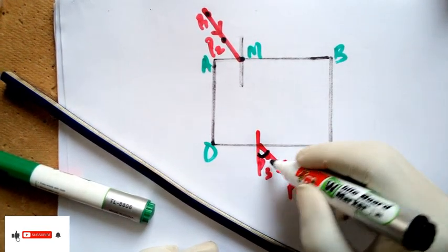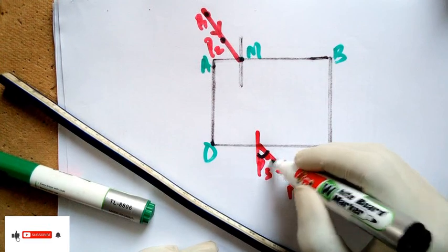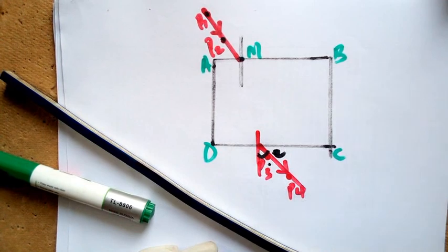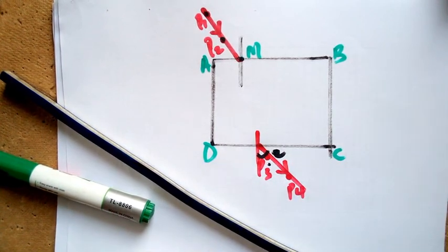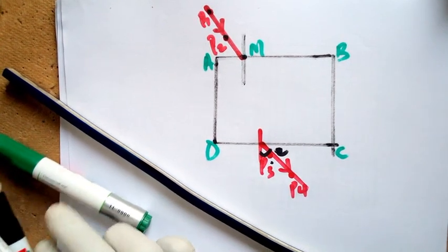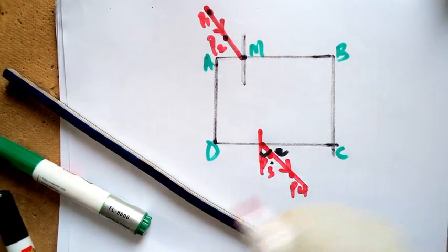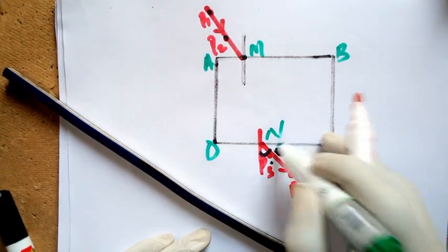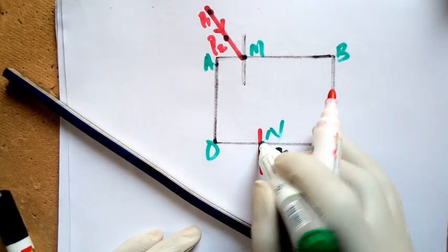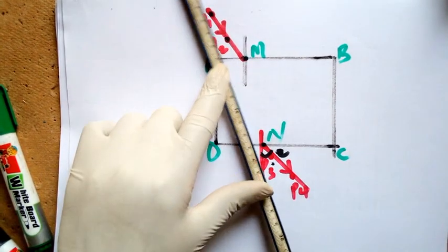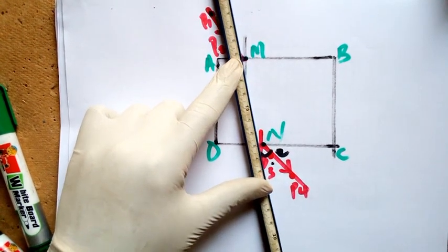This angle here is going to be your emergent angle. Let me put it here. So that's your E, emergent angle. Sorry about the marker. Let's tag this point N. That's this point, the point of emergence.